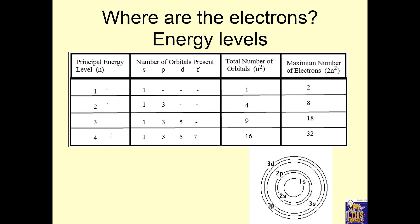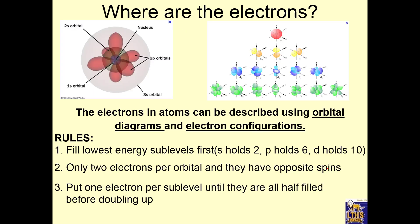If you want to think of it like this, realize that these are just representing the energy levels. The first energy level has one sublevel. The second energy level has two — S and P. The third energy level has three sublevels — S, P, and D. A better model would be this.